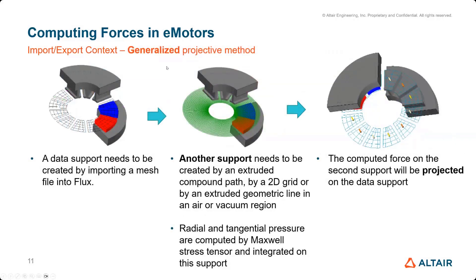And typically the same is done in generalized projective method, except this time we don't use a given cylinder created by Flux, but the user has to create a specific support, like a grid in this case, on which to do the computation. And then still the force is mapped and projected onto the support to export the mesh.